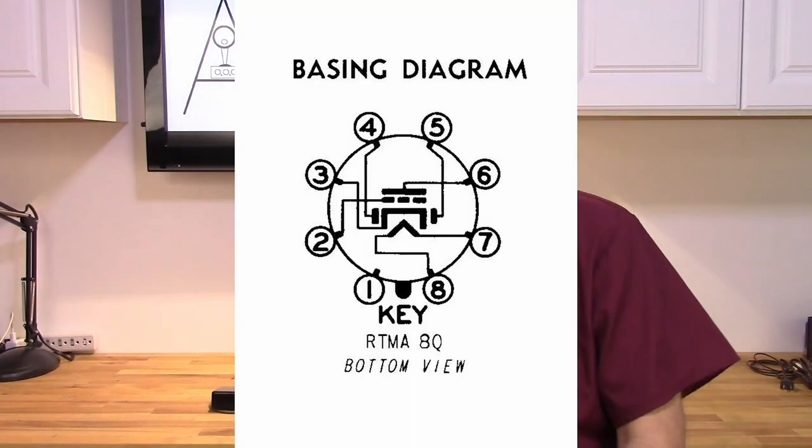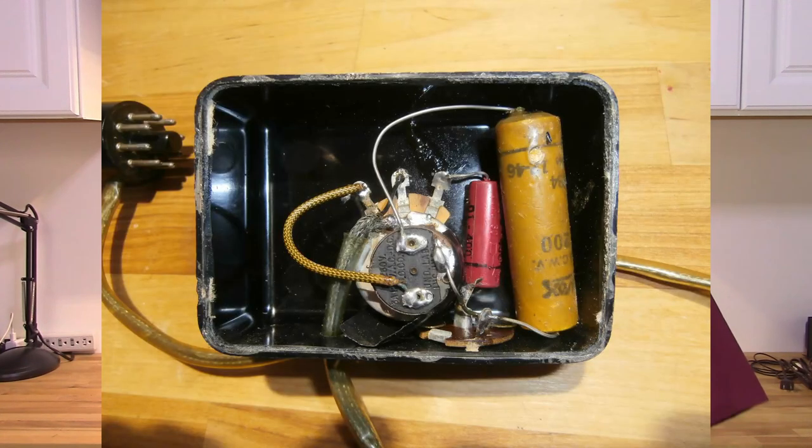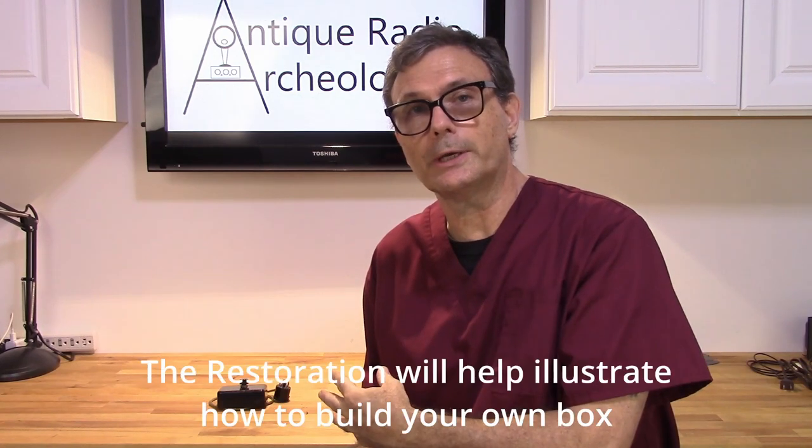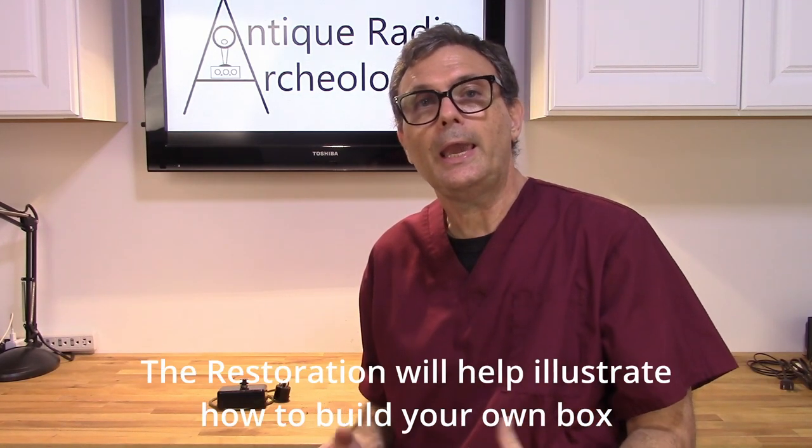It goes to pin two on this tube, and on this particular detector tube, pin two is the screen grid. By doing that, you're injecting that audio and it actually sounds pretty good. So that is an alternative, and I'm going to go ahead and restore this thing. It's got old caps on it and this thing's actually broken, it's not working. So I'm going to do the work to get this thing working again, and then I'm going to show you the circuit and how to use this to input a Bluetooth signal into a radio.